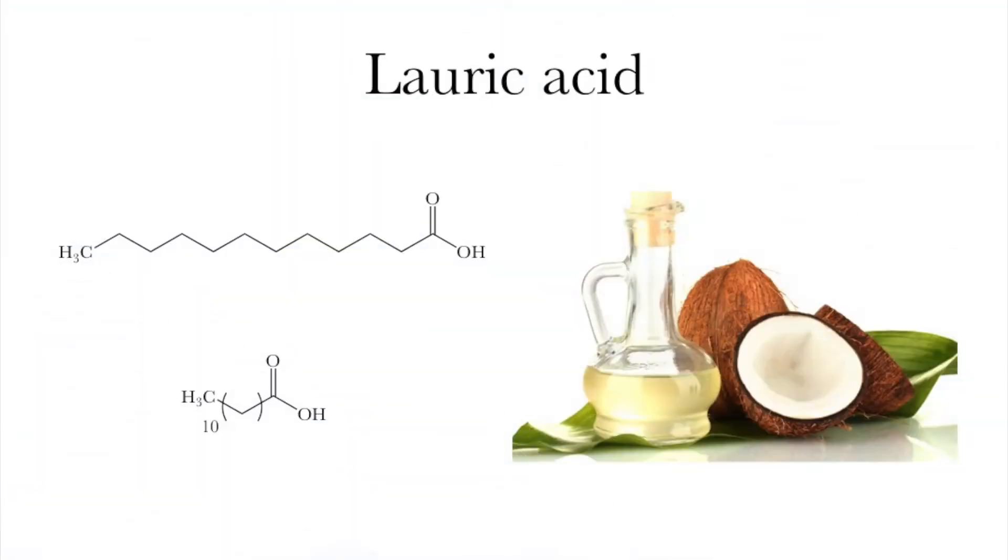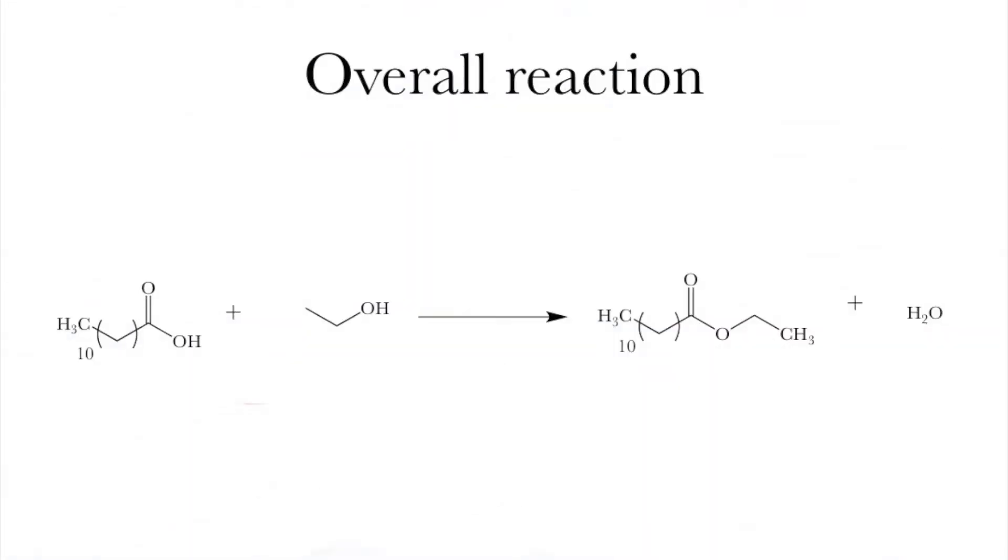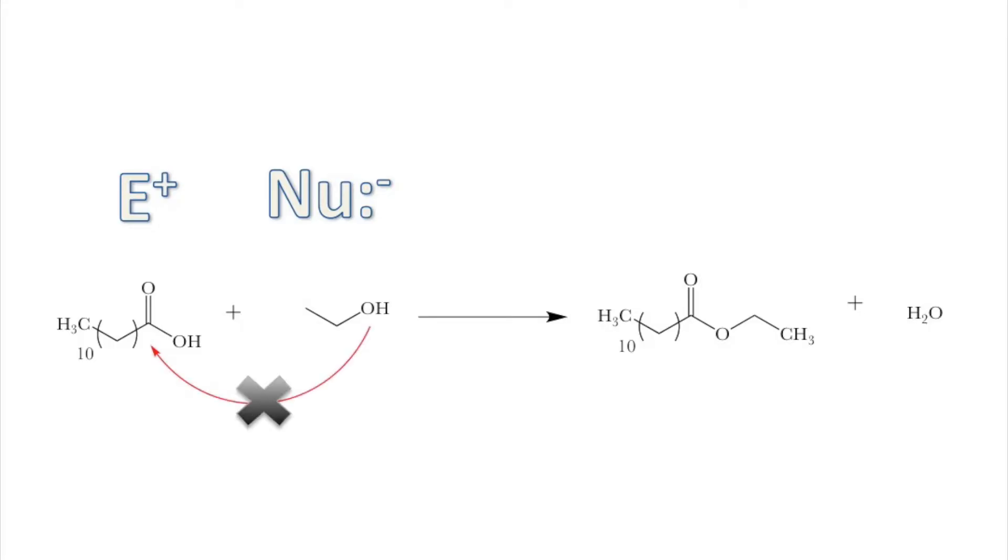Our carboxylic acid today is lauric acid. It's a 12-carbon fatty acid common to coconut oil. If we look at the overall reaction, we might anticipate that it's going to be straightforward. The alcohol oxygen is a nucleophile, the carbonyl carbon is an electrophile. Have the nucleophile attack the electrophile, right? Wrong. Turns out alcohols are pretty weak-ass nucleophiles, and carboxylic acids are pretty lame electrophiles too. So how do we get around this?